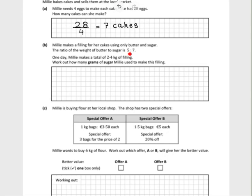On to part B now. 5 and 7 is the ratio of butter to sugar in each filling. If she has 2.4 kgs of filling, how many grams of sugar does she need to make that filling?